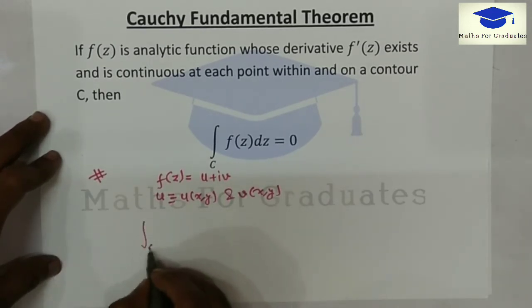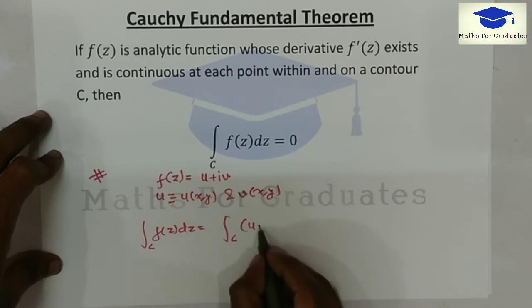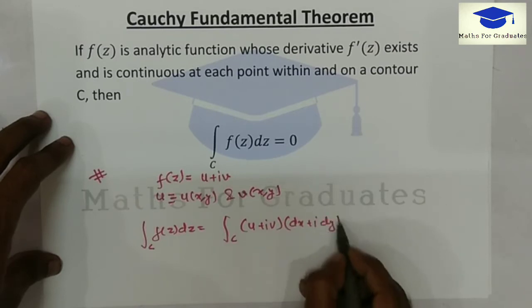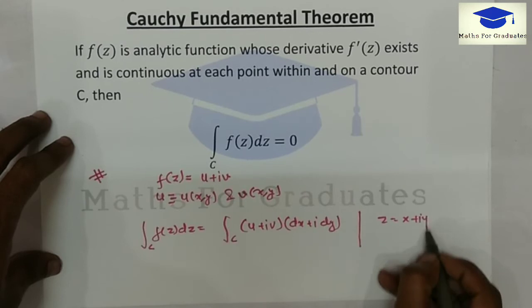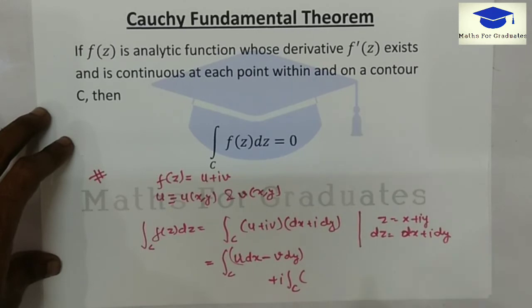Now, integration of f of z is given by u plus iv and dz, where dz is dx plus i dy. So z equals x plus i times y and dz equals dx plus i times dy. Separating real and imaginary parts, real parts will be u dx minus v dy and imaginary part is v dx plus u dy.